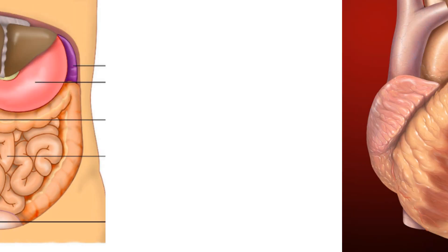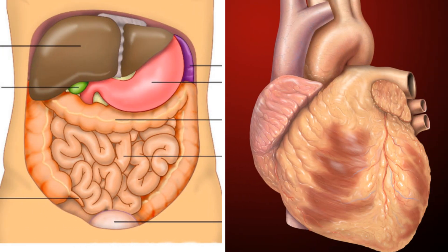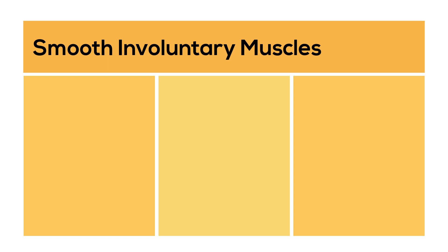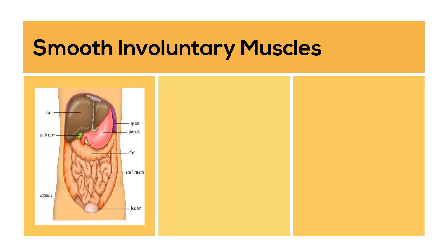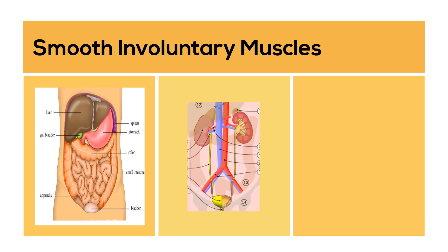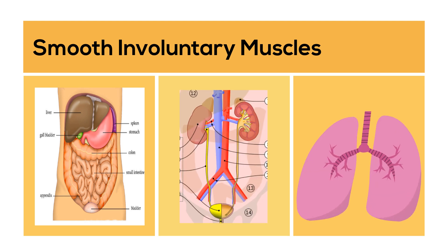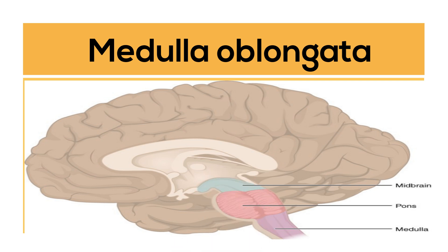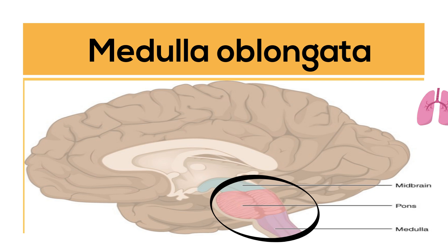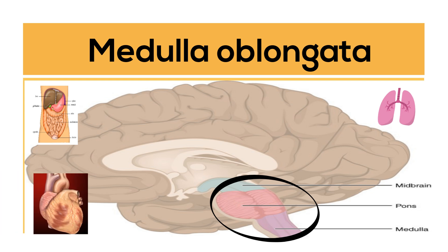Involuntary muscles run automatically. The two major types are smooth muscles and the muscles of the heart, which are called cardiac muscles. Smooth muscles include muscles that can be found in your stomach, intestines, in the arteries and veins, and many other places, even around the eyes. Involuntary muscles are controlled at the medulla oblongata, which is located at the brain stem. This portion of the brain controls involuntary movements such as breathing, digestion, and your heart rate.